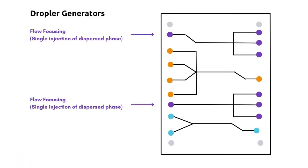The drop chip has one flow splitter and three droplet generators. There are two different designs of the droplet generator.